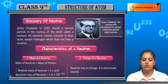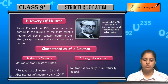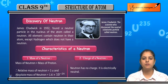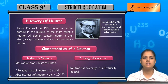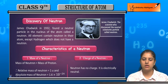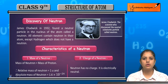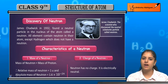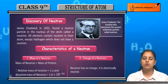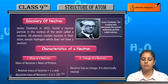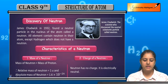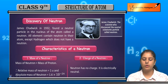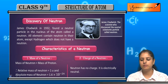The characteristics of neutrons: first, the mass of neutrons. The mass of neutrons and mass of protons are both equal. The relative mass of neutrons is 1 mu, and the absolute mass of neutron is 1.6 into 10 to the power minus 24.